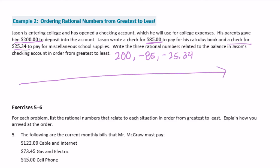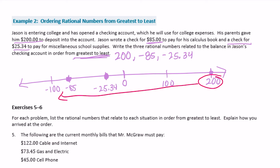Write them from greatest to least. It's important to pay attention — this says greatest to least, whereas before we were doing least to greatest, so this is the opposite order. On the number line, 200 is all the way to the right, negative 85 is to the left of zero, and negative 25 and 34 hundredths is between zero and negative 85. Going greatest to least: 200, then negative 25 and 34 hundredths, and finally negative 85.